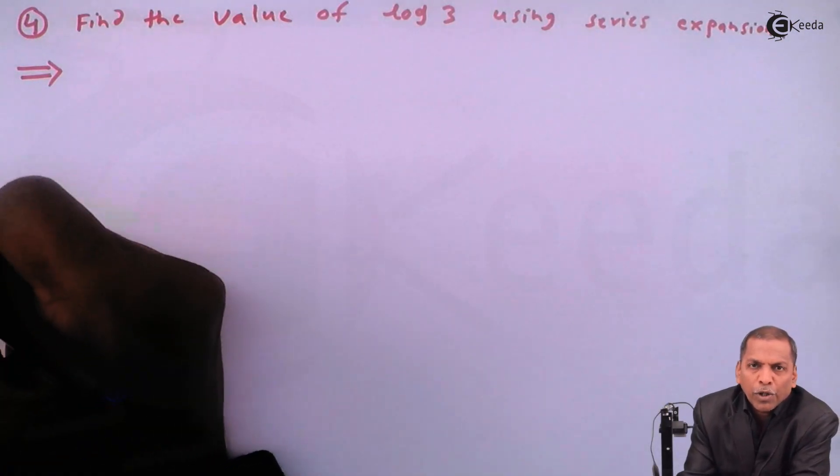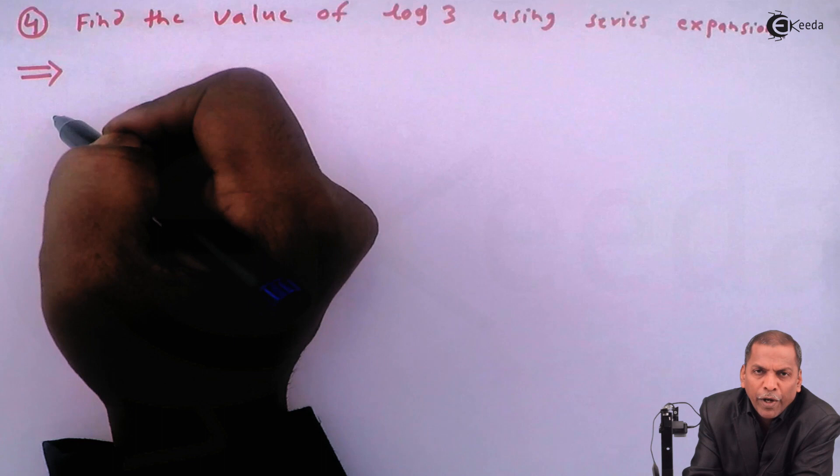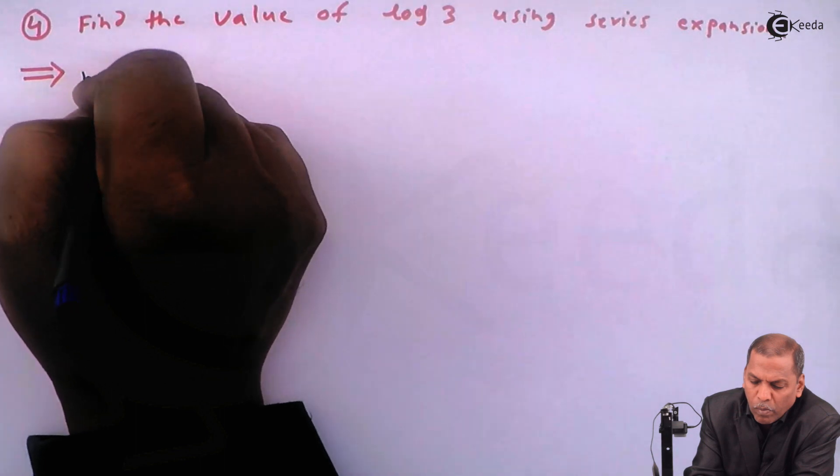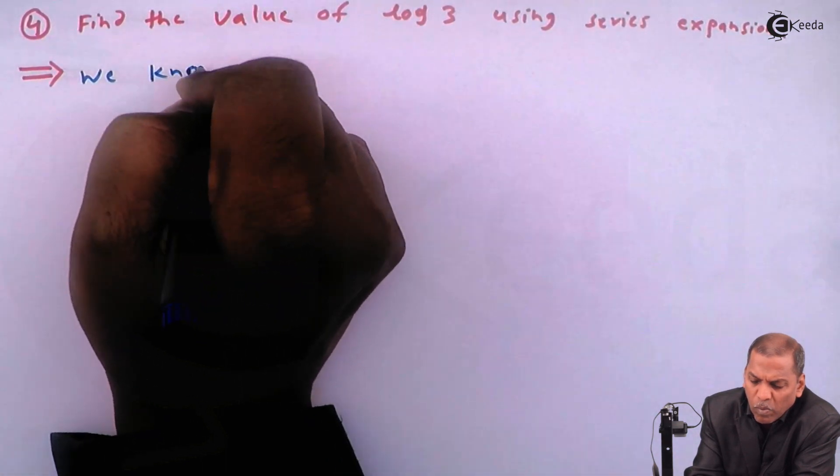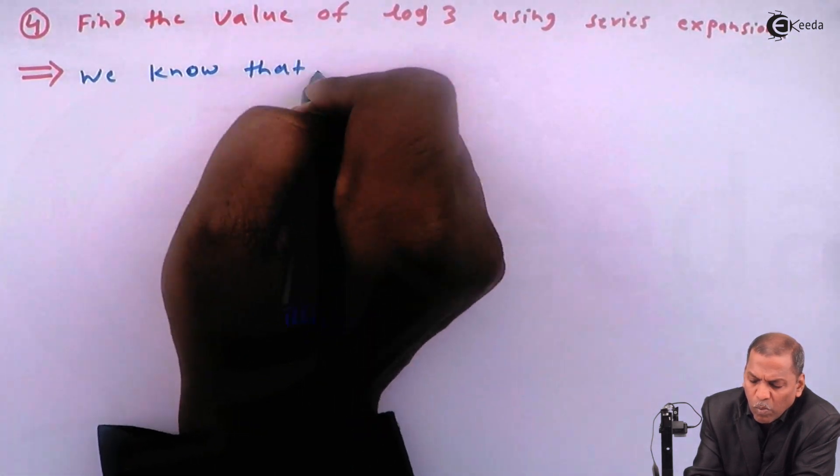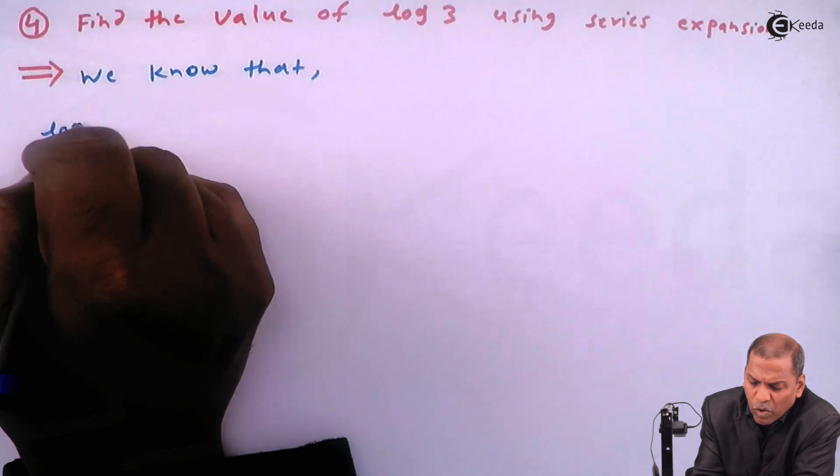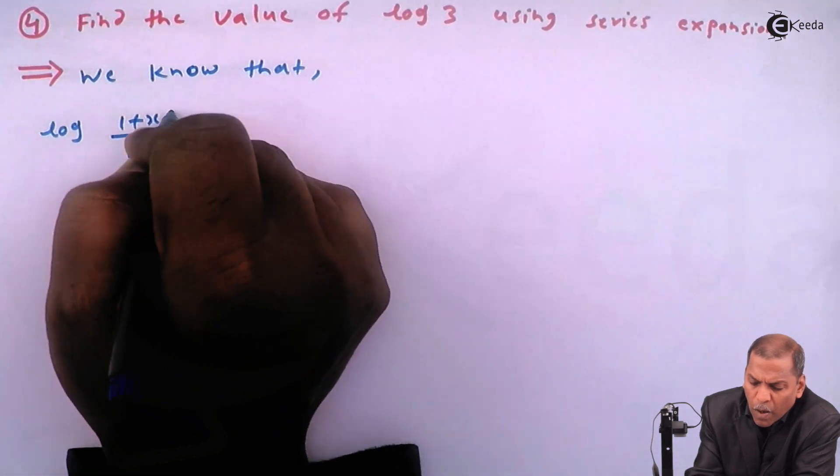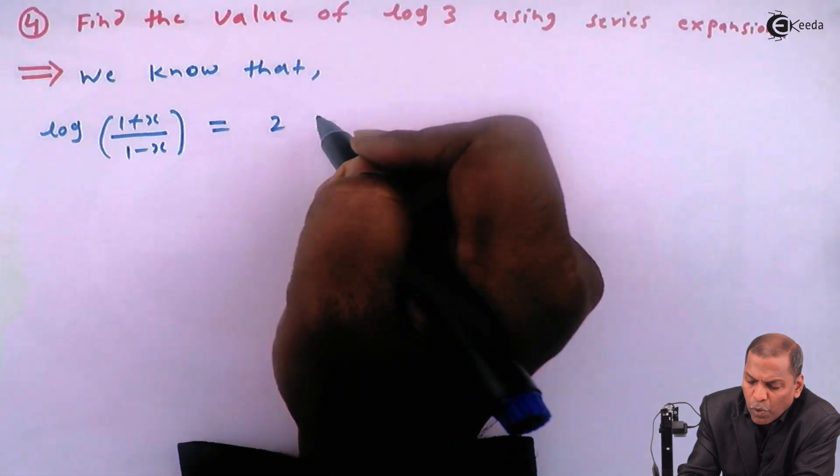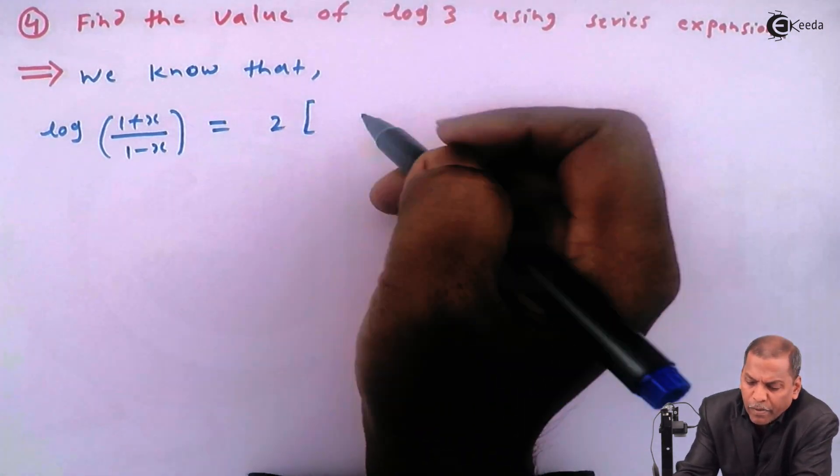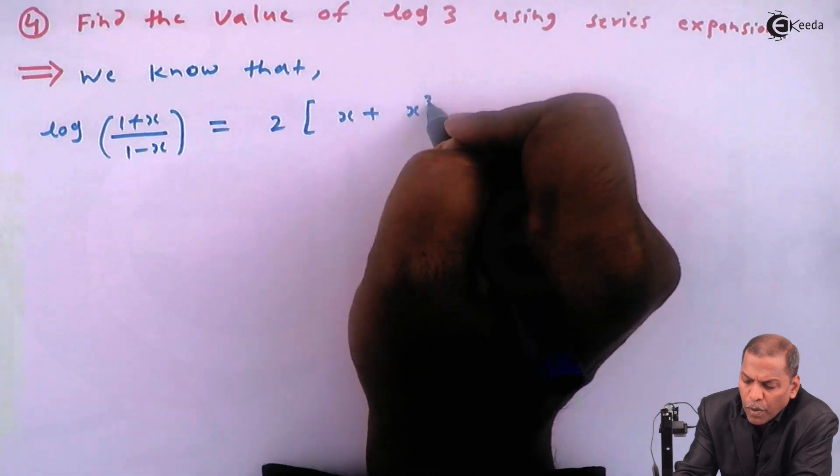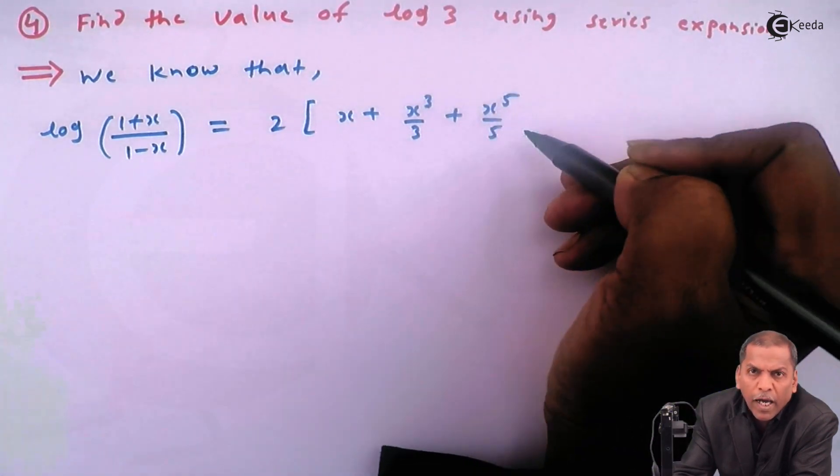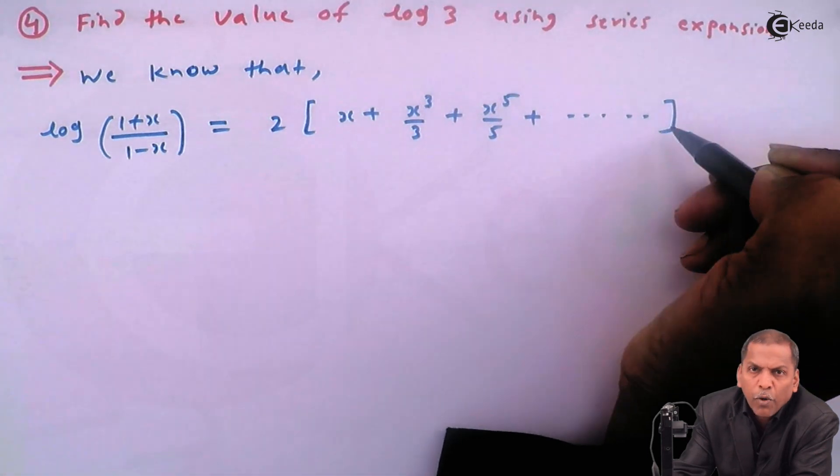Now let's see the solution. First, we write the logarithmic series expansion that we know: log((1+x)/(1-x)) = 2[x + x³/3 + x⁵/5 + ...]